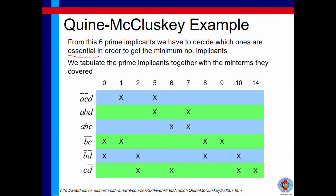So what do we do? We tabulate all 6 prime implicants — obtained by combining minterms and implicants — into a table. We put the prime implicants as rows and then list out all the minterms that we have to cover, in this case from 0, 1 up to 10 and 14. Then we match each prime implicant with the minterms that constitute it.